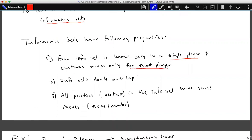So information sets are also disjoint. They don't overlap. So players cannot have two different information sets at the same time.